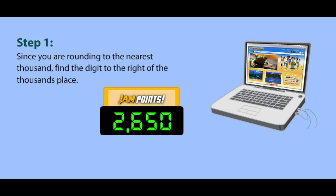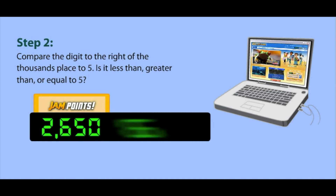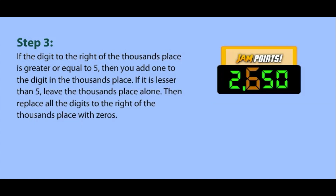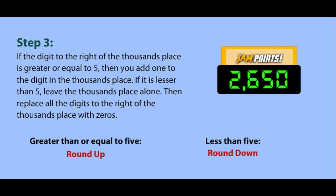The thousands place is the 2, and the digit to the right of it is a 6. We know that 6 is greater than 5. If the digit to the right of the thousands place is greater than or equal to 5, then you add 1 to the digit in the thousands place. If not, you leave the thousands place alone.